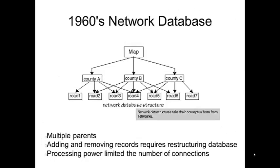To deal with this, the hierarchical system was extended to allow multiple parents, creating a network database. Each node can now have multiple parents, so a road can be associated with multiple counties. But the same problem remains — adding or removing records still changes the whole network structure, and in the 1960s with very limited processing power, it was really difficult to model large numbers of connections on nodes.